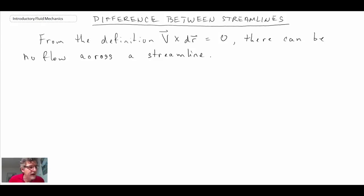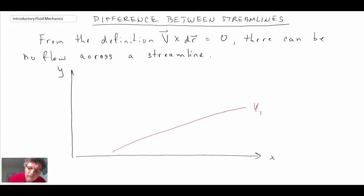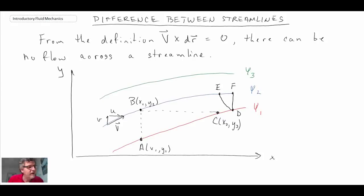So what are the implications of that? Let's draw out a schematic. There we have a schematic of streamlines or stream functions. We have a stream function of psi 1, a stream function of psi 2, and a stream function of psi 3. What we're going to do is take a look at the flow rate across a number of those lines.